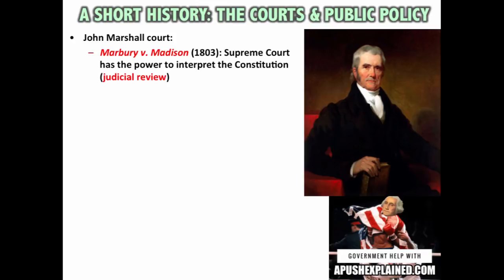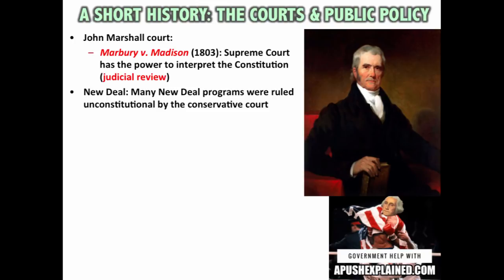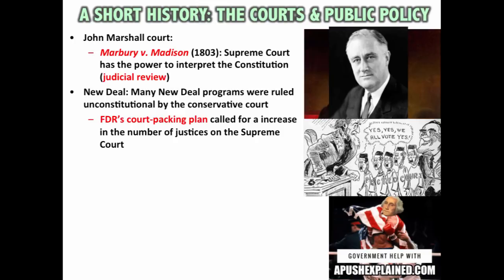Another significant moment in Supreme Court history is during the New Deal. Many New Deal programs were ruled unconstitutional by the more conservative Supreme Court — things like the Agricultural Adjustment Act and the National Recovery Act. FDR came up with his court packing plan, calling for an increase in the number of justices so he could appoint liberal judges to rule in favor of New Deal policies. This plan was ultimately rejected by Congress, including Democrats.